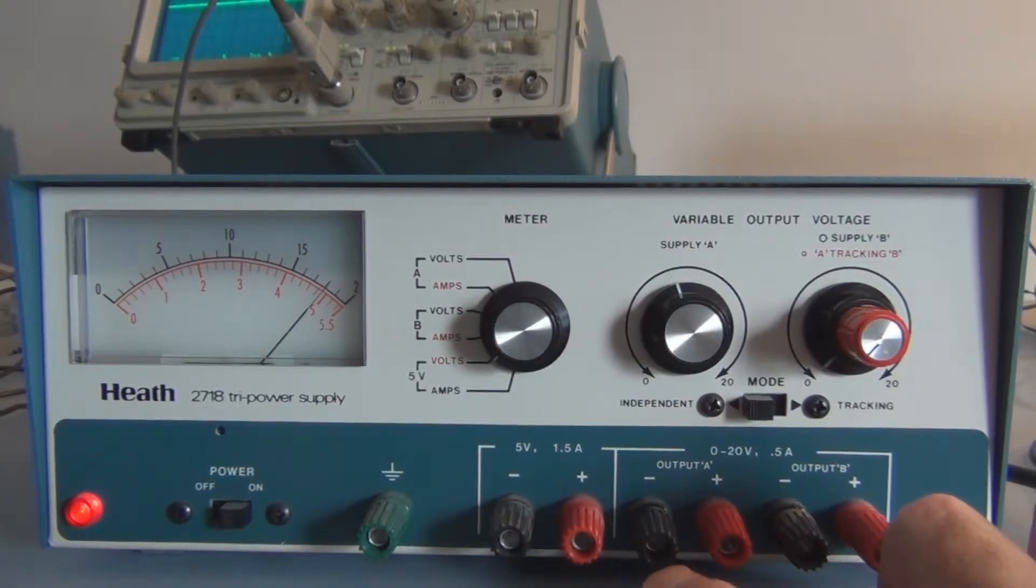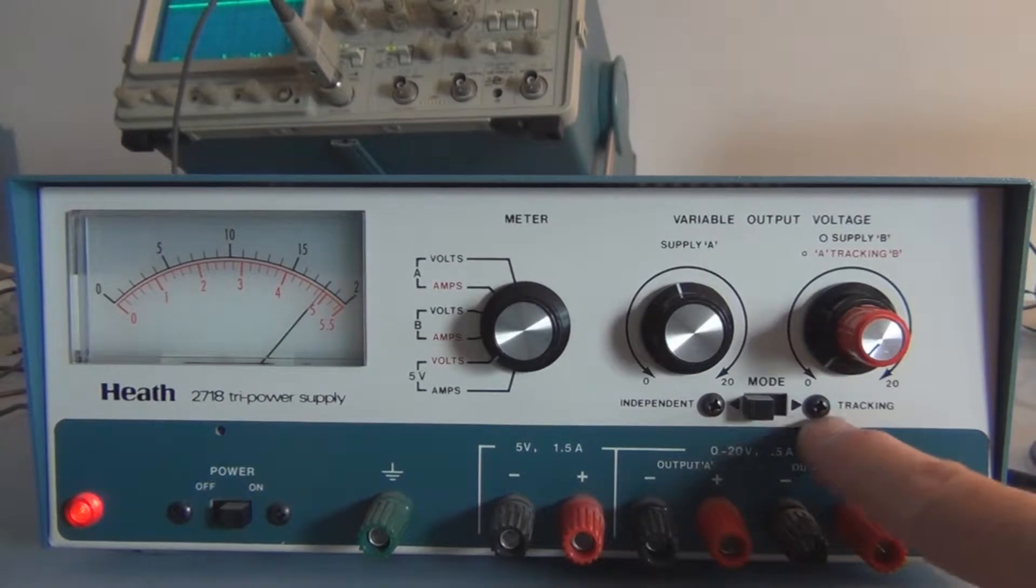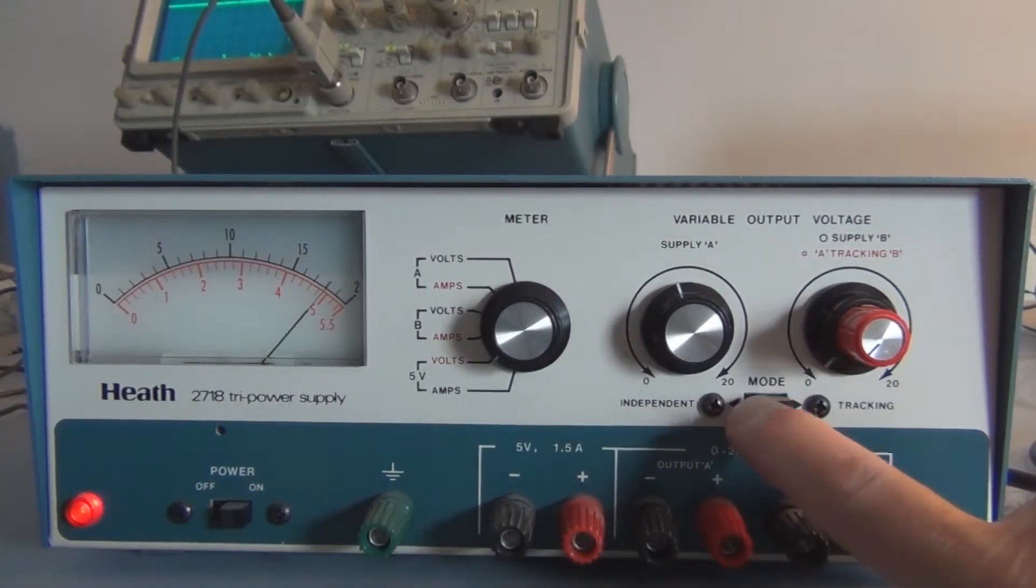And it has two outputs here, zero variable, zero to 20 volts, 0.5 amps, and they can be independent or tracking supplies.